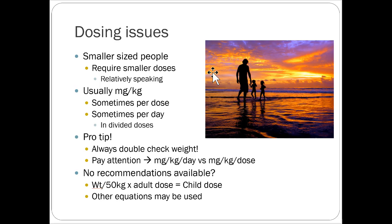If there are no child dosing recommendations available and you really need to use a drug, you can divide the child's weight by 50 kg and multiply by the adult dose to get an approximate child dose. There are more complicated equations but that's a pretty basic straightforward one.